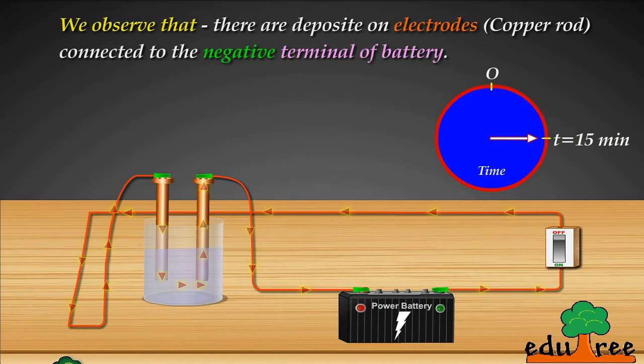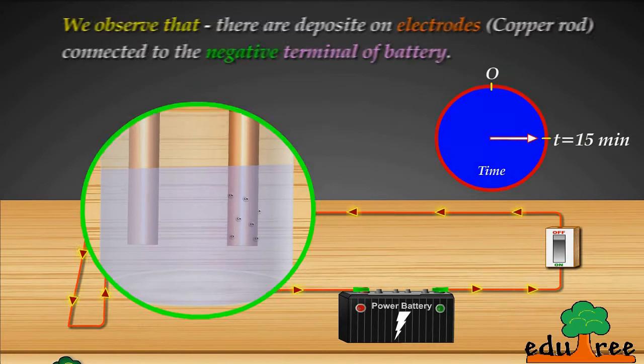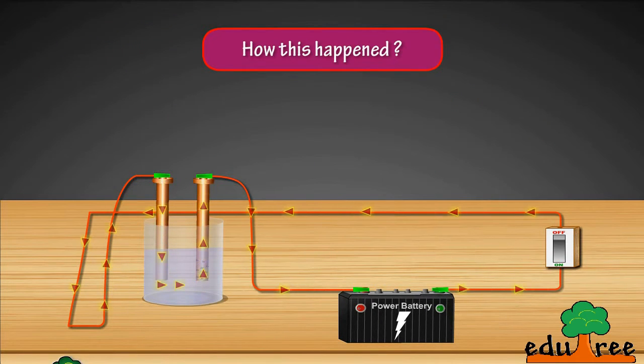We observe that there are deposits on the electrode, the copper rod connected to the negative terminal of the battery. How did this happen?